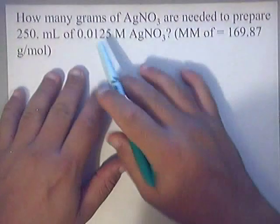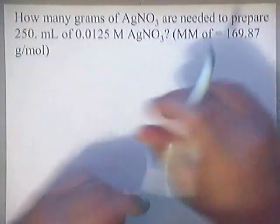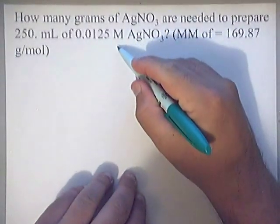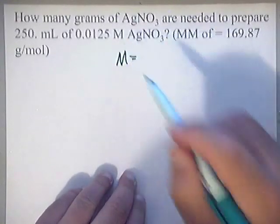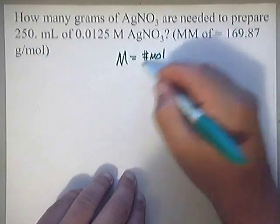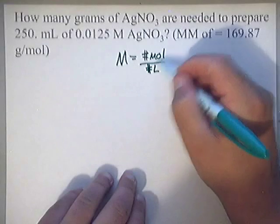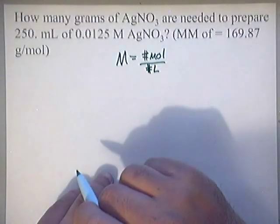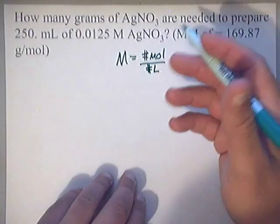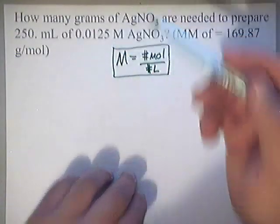Now, when you do these molarity problems, you need to keep some things in mind. You need to keep in mind that this big M, which they're showing you here, stands for the number of moles over the number of liters. Now, the number of moles is for the solute, the number of liters is for the solvent. Now, just keep that in mind the whole time you're doing this.